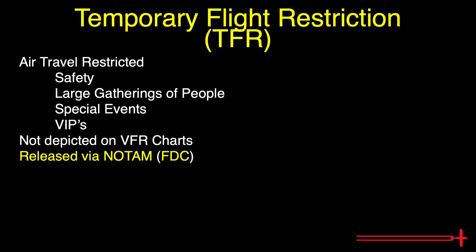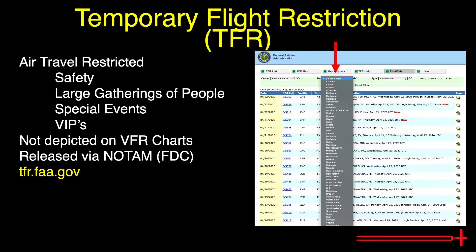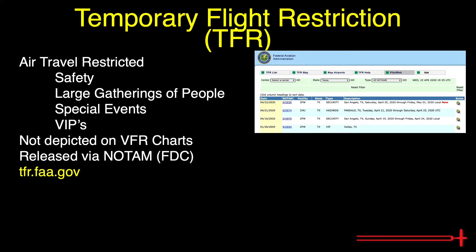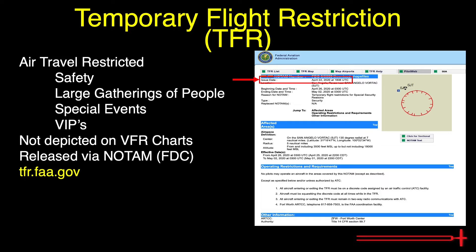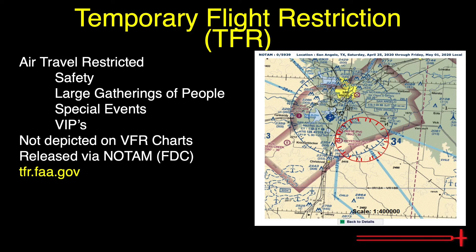To find information regarding TFRs that may affect you, we can head over to the FAA's TFR database at tfr.faa.gov. The home page of the site looks like this. I'll typically use this drop-down menu to view NOTAMs by state. After narrowing the list down, if we found a NOTAM we think might affect us, we can click on the NOTAM's code for more information. Here, we're given more information like the issue date, beginning and ending times, and the affected area. On the side of that, one may view an image of the affected area. For a much better image, it is helpful to click this button labeled 'Click for Sectional.' It allows one to view the temporary flight restriction pasted onto a sectional chart for a better visual idea of where the affected area lies.